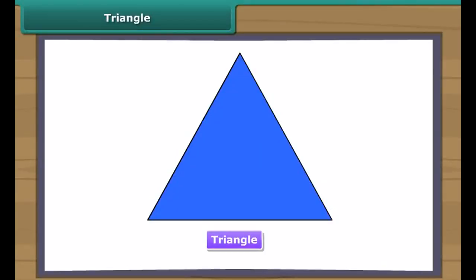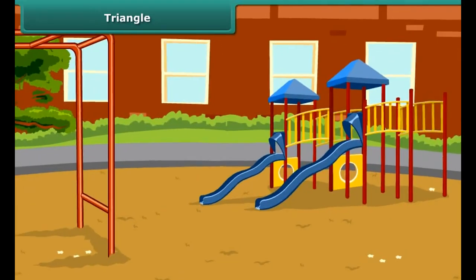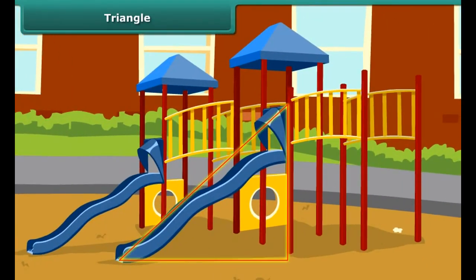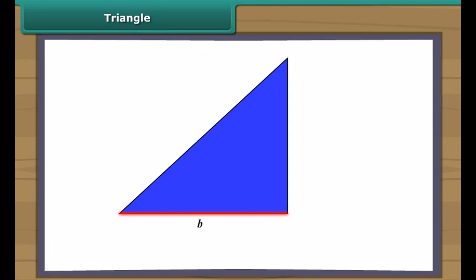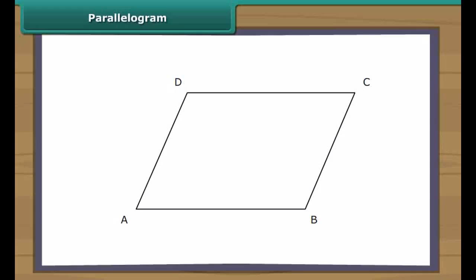Triangle. What is a triangle? A triangle is a three-sided closed figure. Have you noticed the slider in the park? It is in the shape of a triangle. So, can we find the area of a triangle? Yes. We can find the area of a triangle by using the formula. For this, we require the measures of the base and the height of the triangle. The area of a triangle is half the product of its height and base.